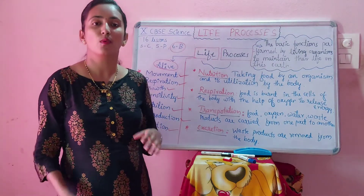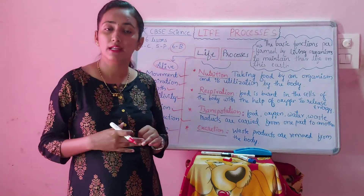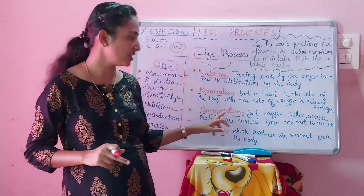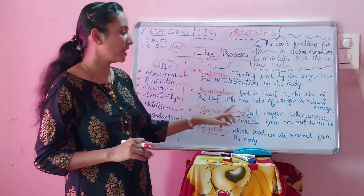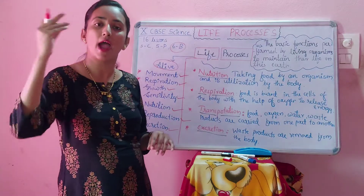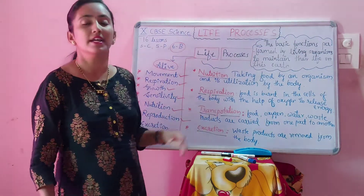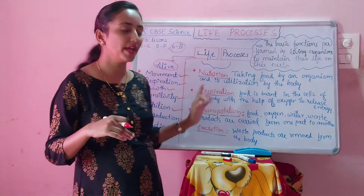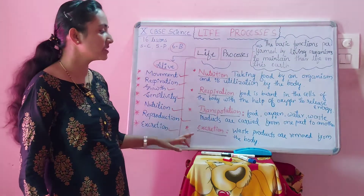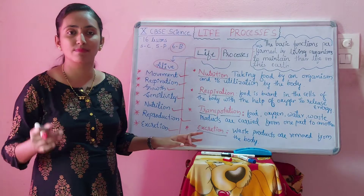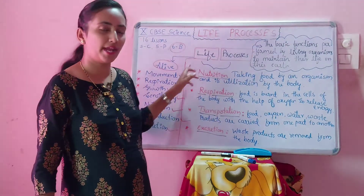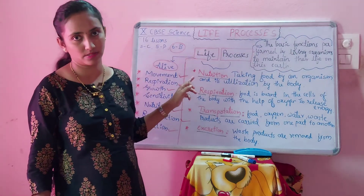Next we will go to transportation. We take in food, water, and air — whatever we take in should be transported to each and every part of our body, and that is done by the transportation process. Transportation is the process by which food, oxygen, water, and waste products are carried from one part of the body to another part of the body. Next is excretion. Excretion is the process by which all waste products are removed from our body.